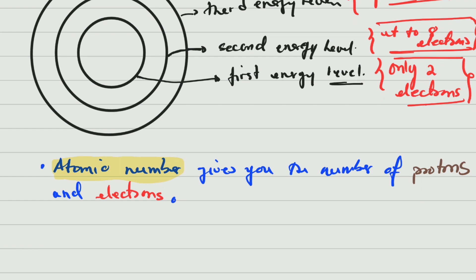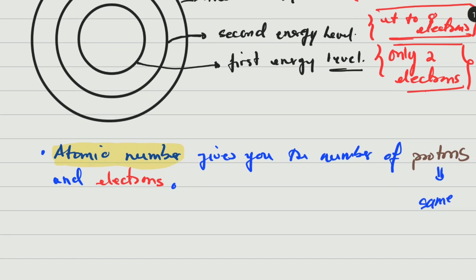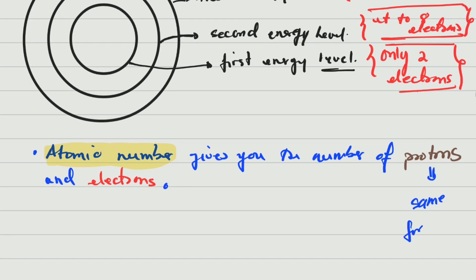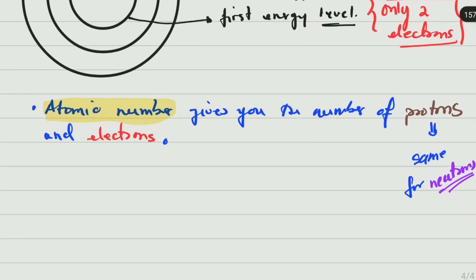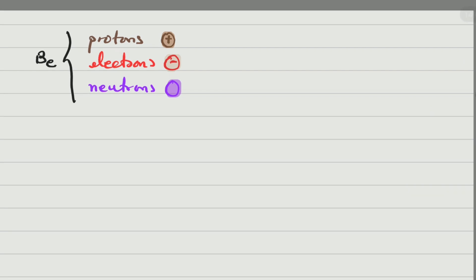You may ask, what about the neutrons? For now, we are going to use the same number of protons and neutrons. But it's not exactly that — sometimes substances may have more neutrons than protons or less neutrons than protons. It does not really matter right now. For now, we are going to use the same number for neutrons as for protons. Let's see one example right now — we're going to do beryllium.